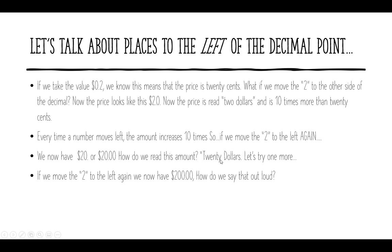Either way, you're going to read it as 'twenty dollars.' Let's try one more — if we move the two to the left yet again, we now have $200.00. We would read this out loud as 'two hundred dollars.' This could also be written without the zeros after the decimal point, just as $200. That's pretty much the basics of reading price signs. Attached to this lesson I'll make a little quiz so you can test out your skills.